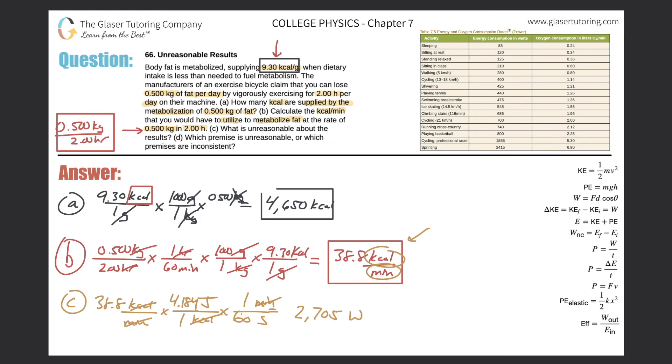Now take a look. Do you see this value even close to any of these? You might see it's close to the sprinting value all the way here at the bottom, but how long can you actually sprint for? Can you do it for two hours? I can't. It's going to be unreasonable. It's just way too high. What premise is unreasonable? You cannot metabolize 0.5 kilograms of fat in two hours. It's basically impossible. You would have to produce more power than sprinting for two hours.